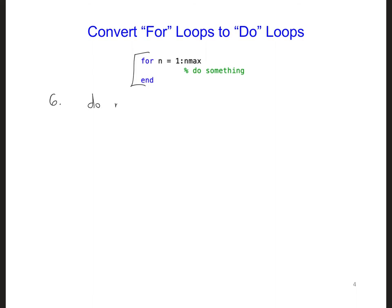For example, we have do n equals 1 comma n max. And then where we're going to perform updates to the field components and so forth. And then we're going to end our time-stepping loop with end do instead of just end. So go through and make these changes to all the for loops that you have in the code.